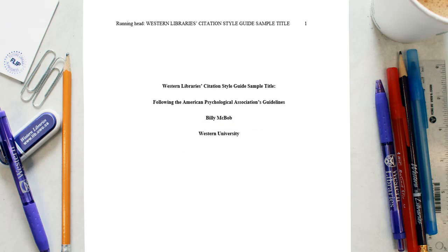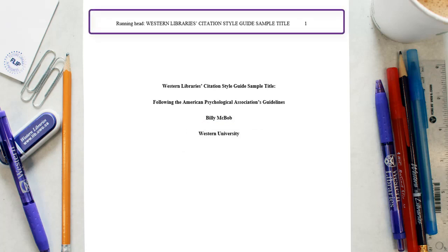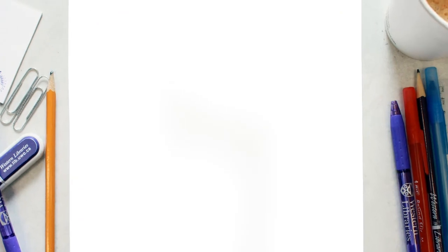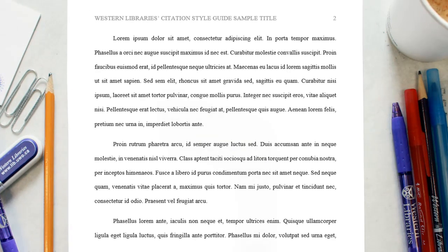In addition, the title page should also include a page header known as a running head at the top of the page. A running head is a shortened version of your paper's title. It should appear in the top left-hand corner in all capital letters. Please note that on your title page, the running head should be preceded by the words 'running head.' The running head should be included on every subsequent page, including the references, and will look like this.